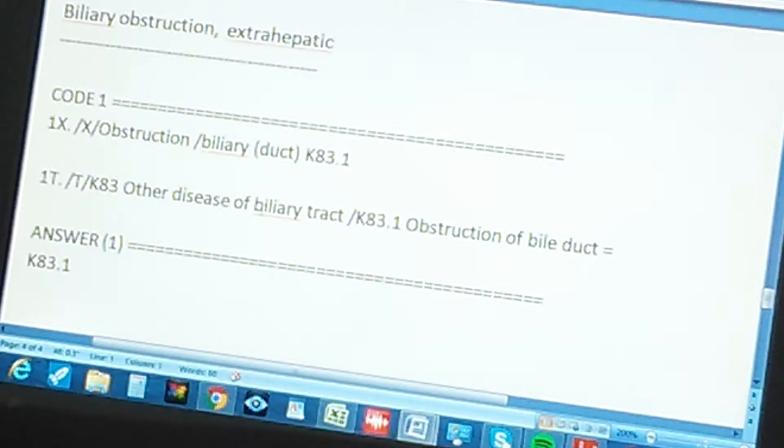There's only one code, and the code through the index is found like this: first you go to the index, then you go to obstruction. You start with obstruction, then you go to biliary, and then you see in parenthesis, which means that whether they mention or not, this code is also for anything in the duct, in biliary duct.